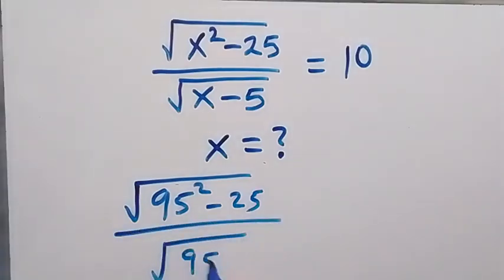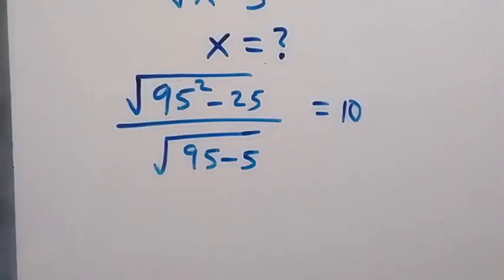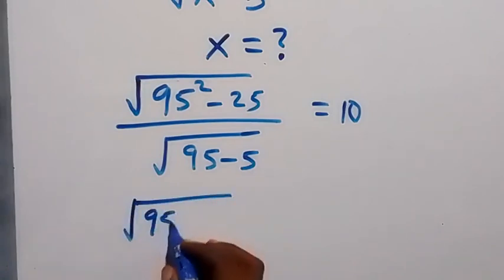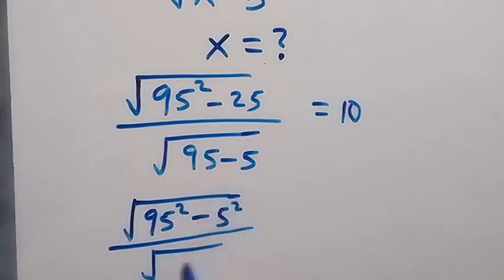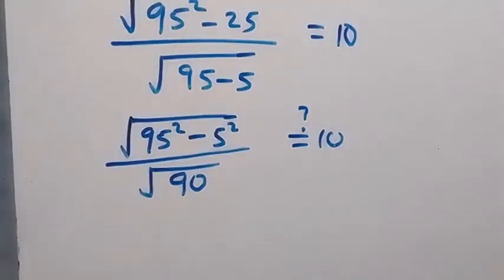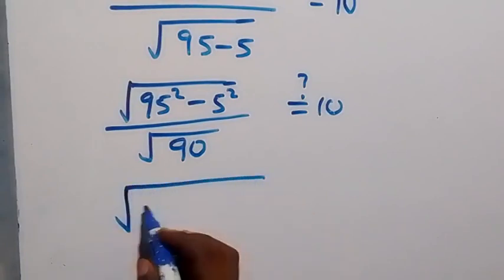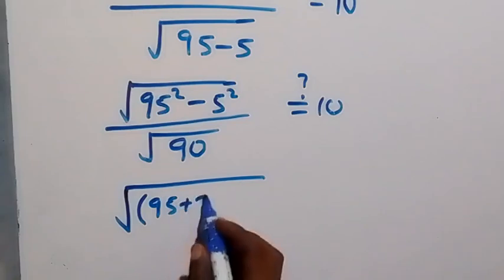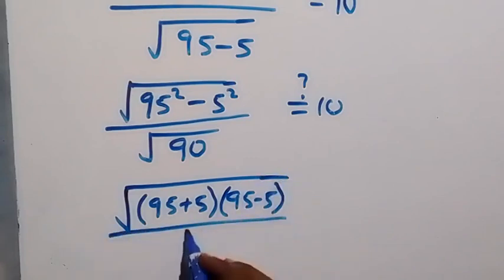Is this going to equal 10? In the next step, we rewrite 25 as 5 squared. This gives the square root of 95 squared minus 5 squared, over the square root of 90. We apply the difference of two squares again, getting the square root of (95 plus 5)(95 minus 5), divided by the square root of 90.